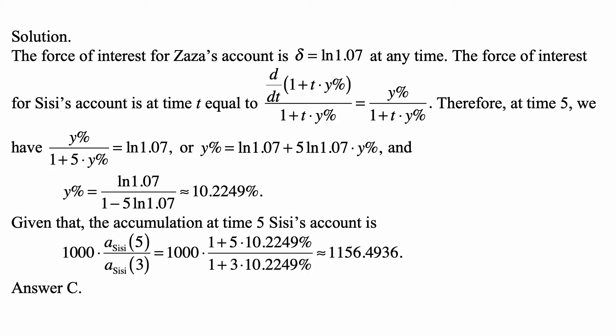Here's a solution. The force of interest for Zaza's account is delta equal to the natural logarithm of 1.07 at any time. The force of interest for CC's account at time T is equal to the derivative with respect to T of (1 plus T times Y%) divided by (1 plus T times Y%). Therefore, at time 5, we have Y% divided by (1 plus 5 times Y%).